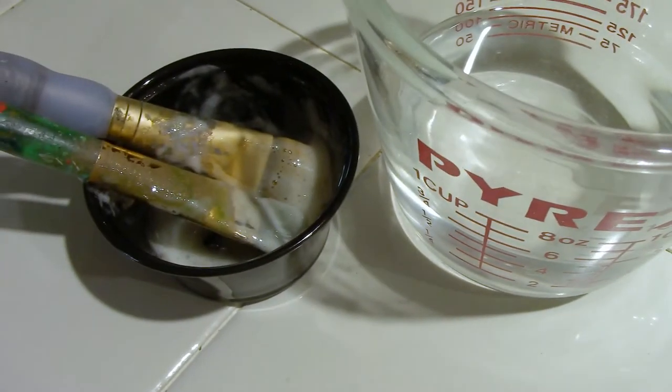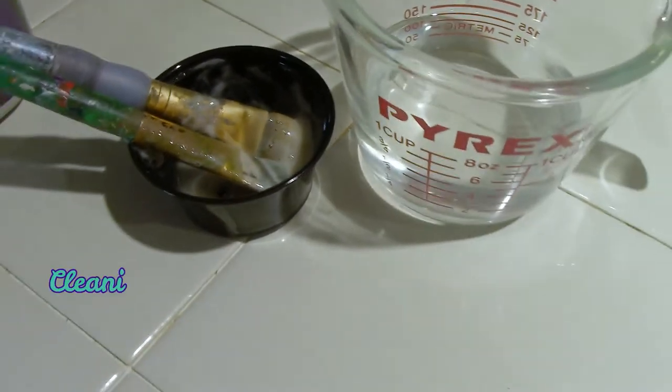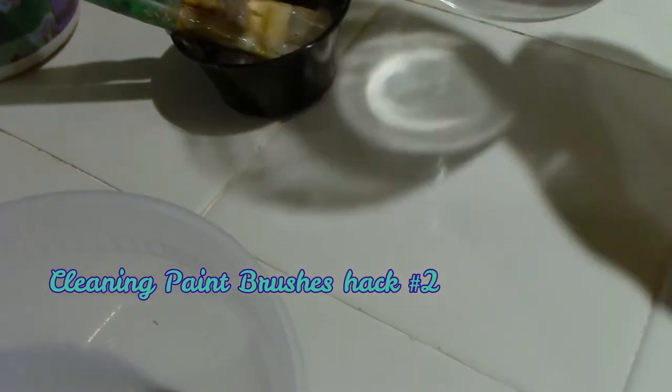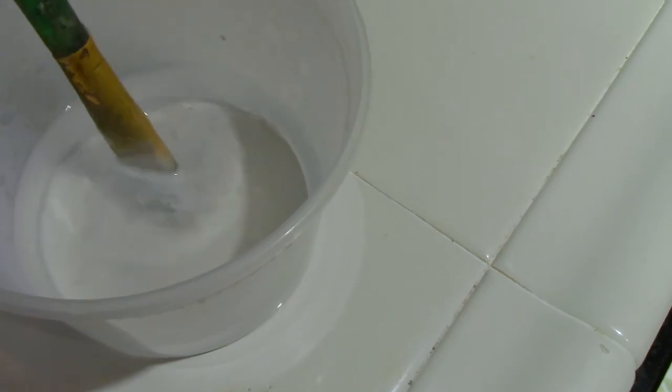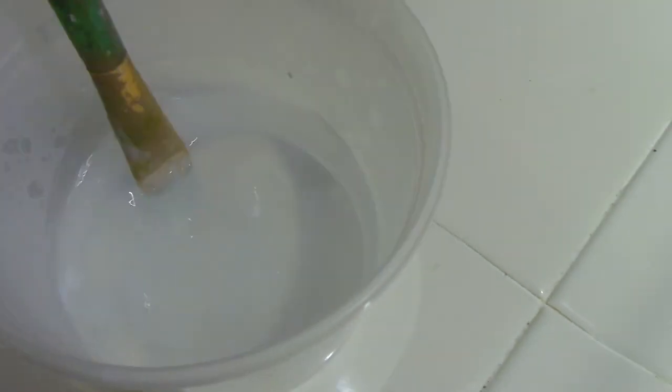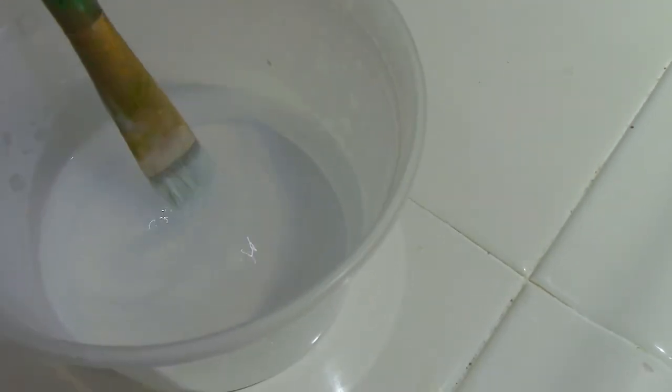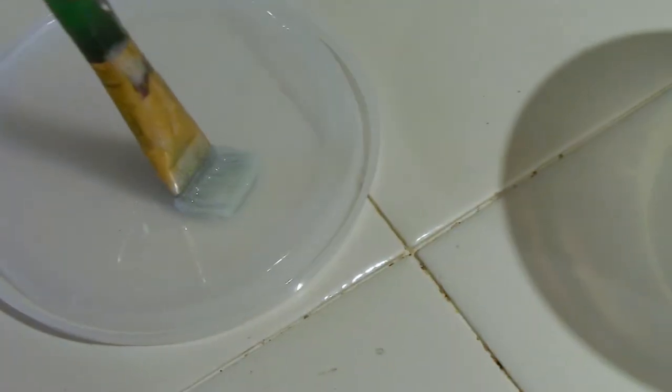So another of the cleaning paint brushes hacks is to pour boiling water into a container and use some pressure into the brush. Carefully not to burn yourself.